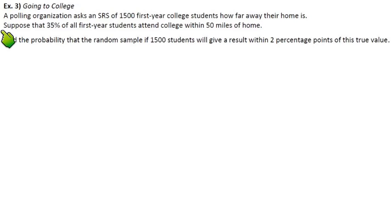So let's suppose that that's the true actual value of college students, the percentage of them that are within 50 miles of their home. Find the probability that the random sample of 1,500 students will give a result within two percentage points of this true value.